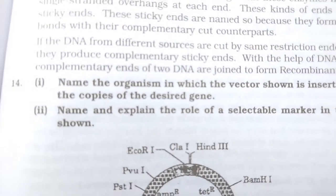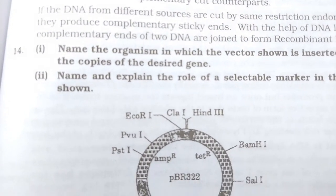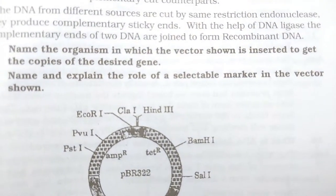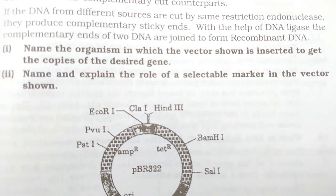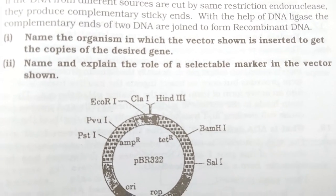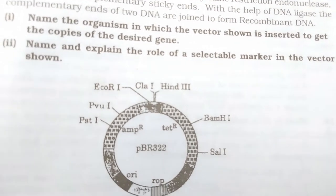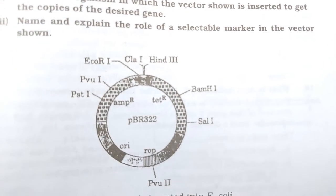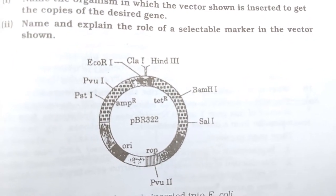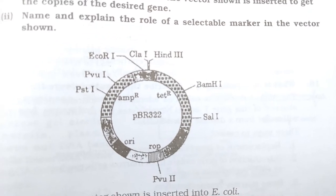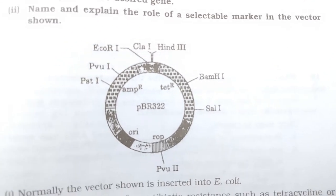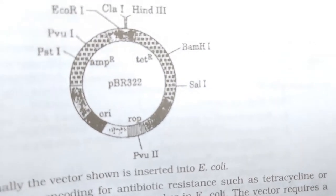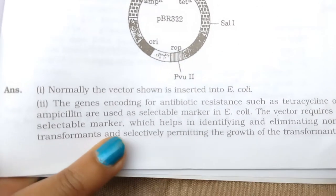Name the organism into which the vector shown is inserted to get copies of the desired gene. Name and explain the role of the selectable marker in the vector shown. This is the vector shown, and the answer follows.